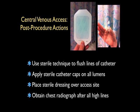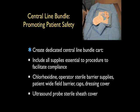Critical actions following placement include using sterile technique to flush all lines of the catheter and placing sterile catheter caps on all lumens. A sterile dressing such as a Tegaderm is placed over the access site, and a chest radiograph is obtained after all high lines to confirm catheter tip placement and rule out pneumothorax. An optimal approach to facilitate compliance is to create a dedicated central line bundle cart that moves to the patient during the procedure.